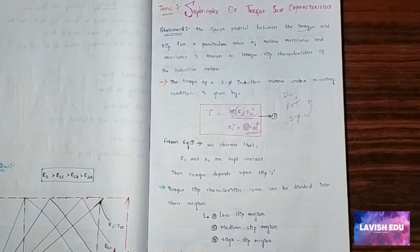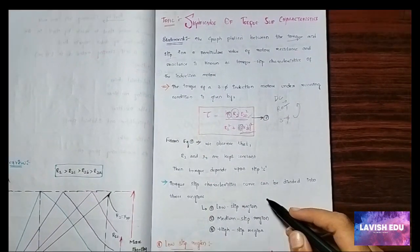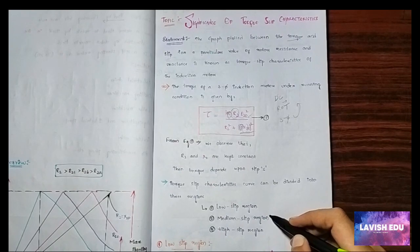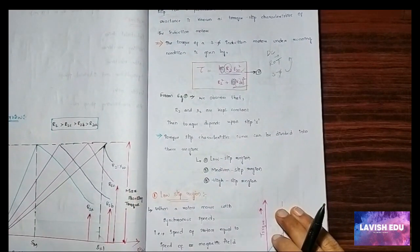Our torque-slip characteristic curve can be observed in three different regions: one is low slip region, another one is medium slip region, and the third one is high slip region.